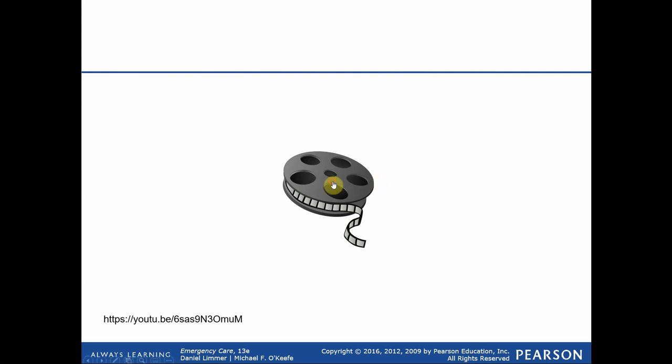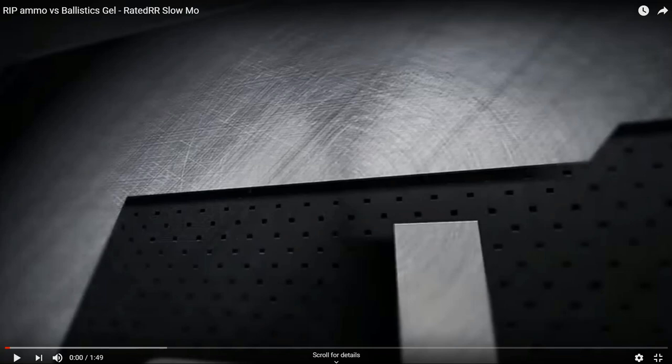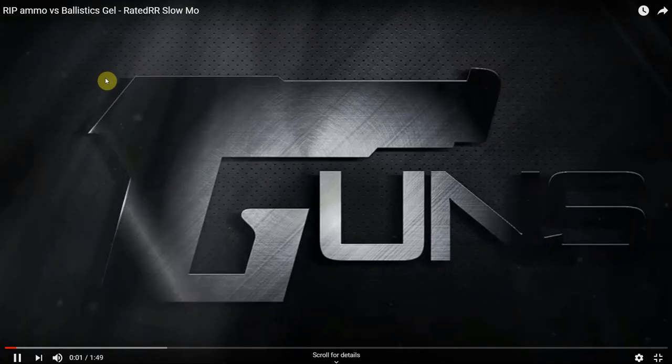Here's a video that illustrates different types of ammunition and how ammunition is specifically designed to do additional damage. Keeping this in mind, we have to have a general understanding of just how much damage can be done internally. This is shown simply to illustrate the type of damage that can be done to human tissue — there's no endorsement for this ammunition or brand.